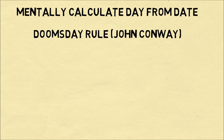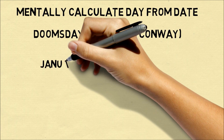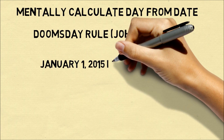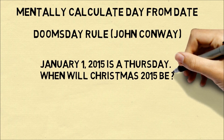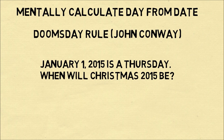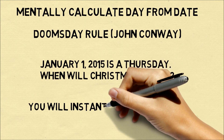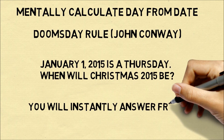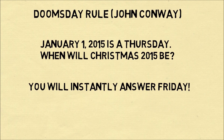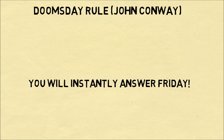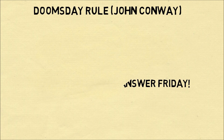We're going to explain the doomsday rule, which was created by the mathematician John Conway. An example of how you can use the doomsday rule: if January 1st this year falls on a Thursday, when will Christmas Day be? When someone asks you that question, you'll instantly be able to answer that it's Friday.